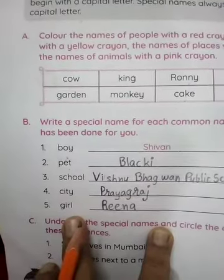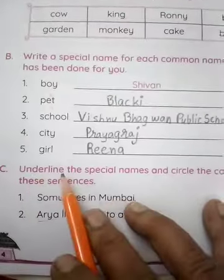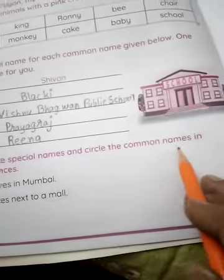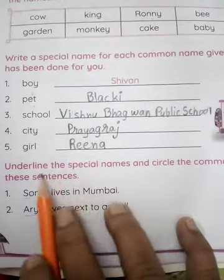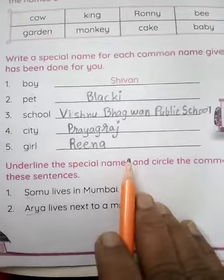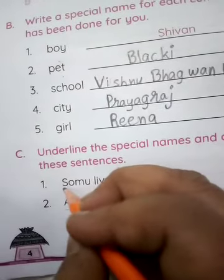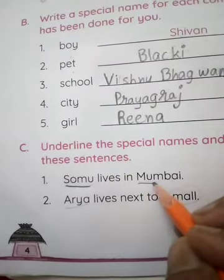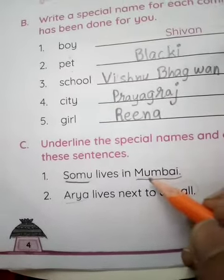Okay, children, I hope you understand. Now, underline the special names and circle the common names in the sentence. Somu — a boy — special name, underline. Mumbai is a special city — special name, underline.